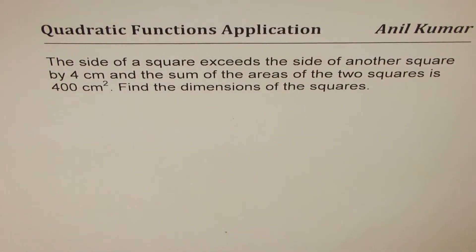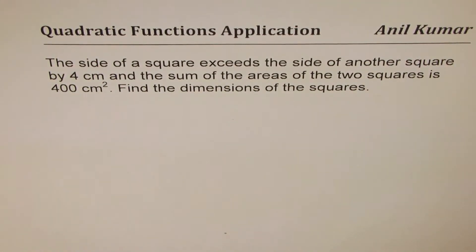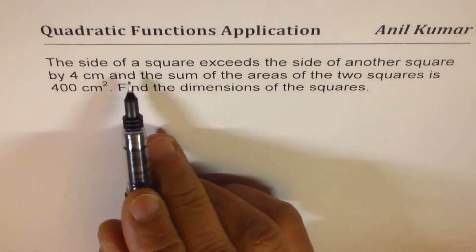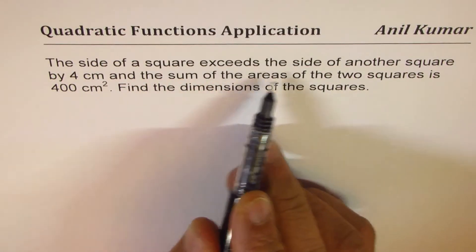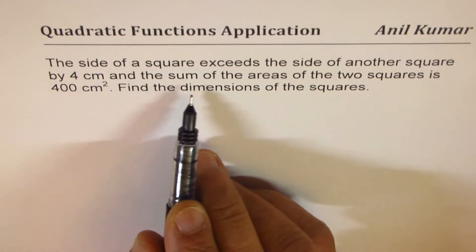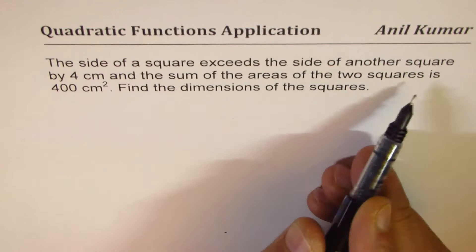I'm Anil Kumar sharing with you a question based on quadratic functions. The question here is: the side of a square exceeds the side of another square by 4 centimeters and the sum of the areas of the two squares is